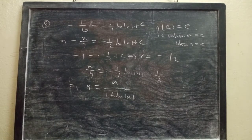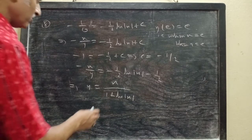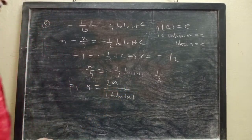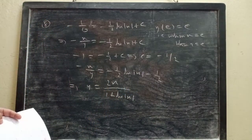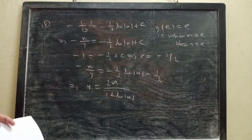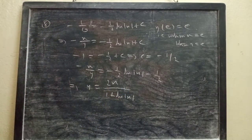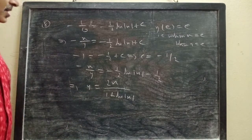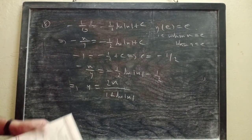Dividing both sides by minus 1 and simplifying, we get y equals 2x divided by (1 plus ln x). This is our particular solution satisfying the given initial condition.